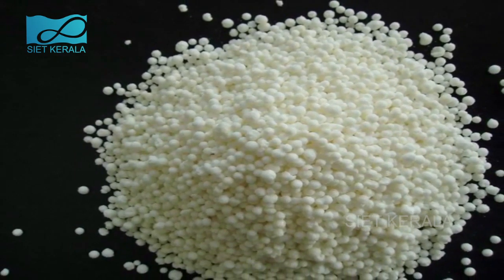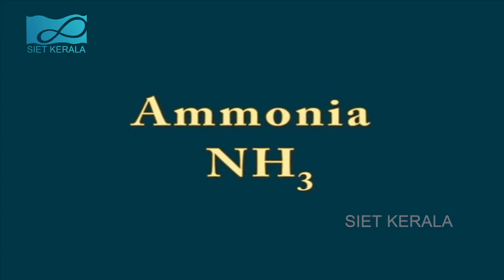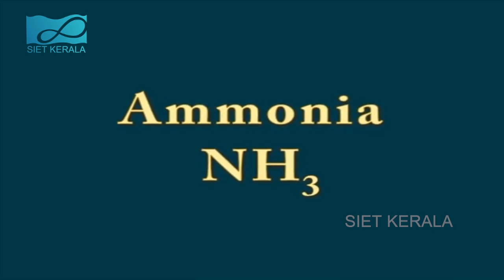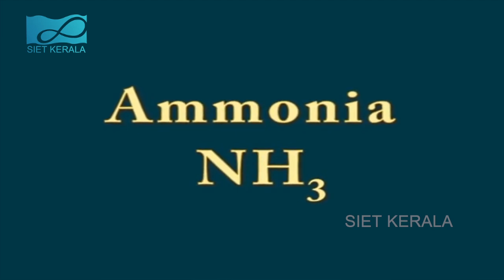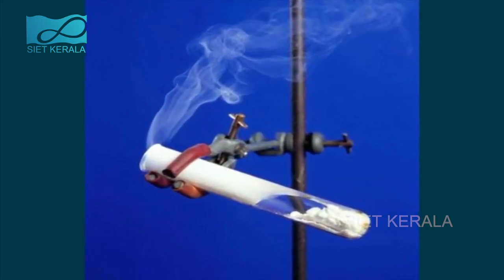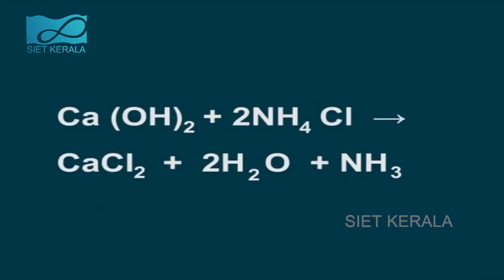Ammonia can be prepared with a simple experiment. The chemical formula of ammonia is NH3. Its density is less than that of air and it has a strong smell — it is a colorless gas. Ammonia is prepared by heating a mixture of ammonium chloride with slaked lime: Ca(OH)2 + 2NH4Cl → CaCl2 + 2H2O + NH3.